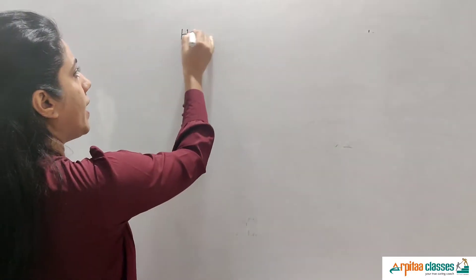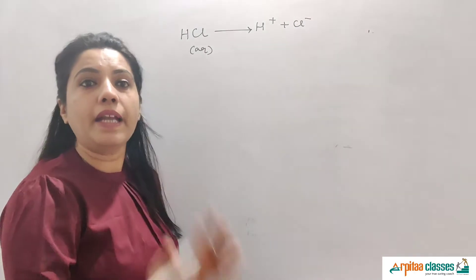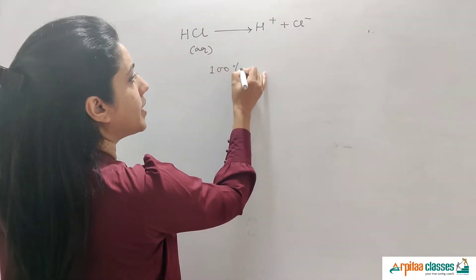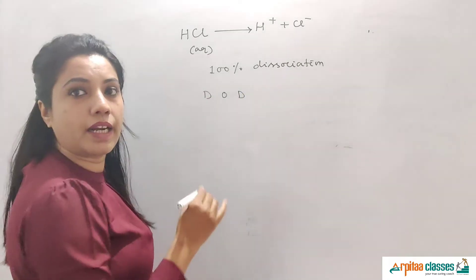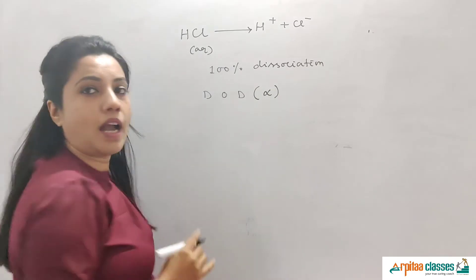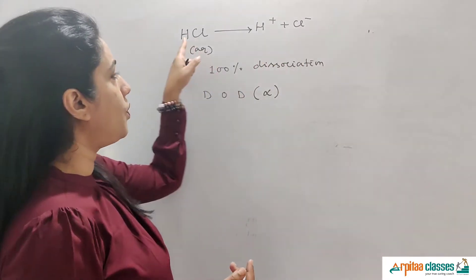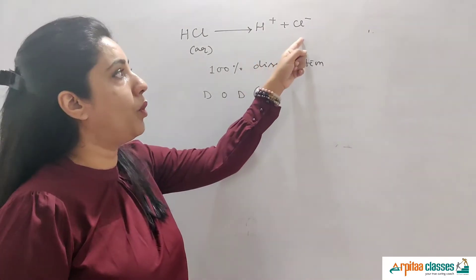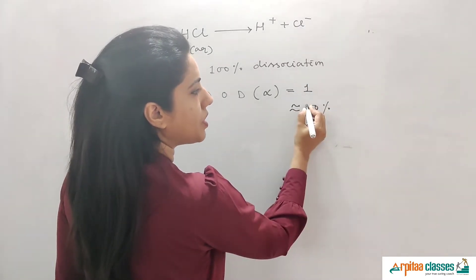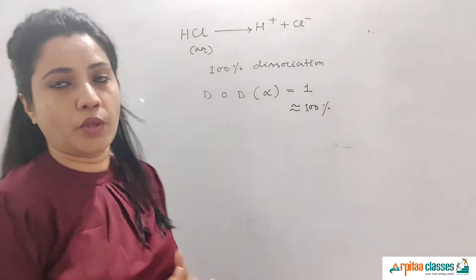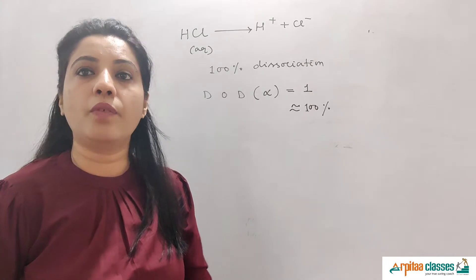If you dissolve HCl (a strong electrolyte) in water, you get H⁺ and Cl⁻ — complete dissociation takes place, 100% dissociation. The degree of dissociation (alpha, DOD) is one or 100%. After some time you get only ions and no molecules. That is why we will not deal with strong electrolytes — in their case, equilibrium is not established.